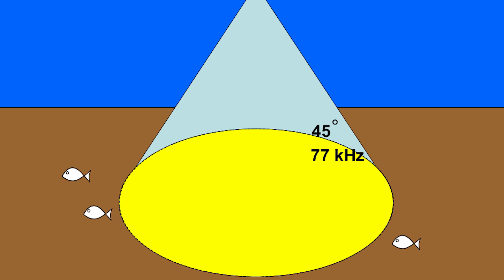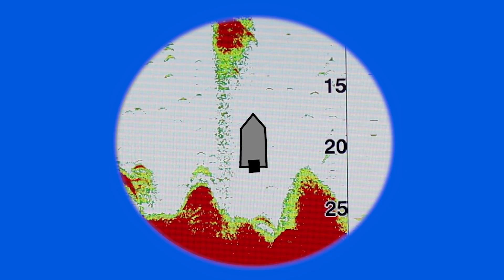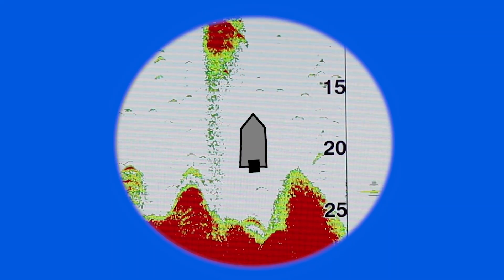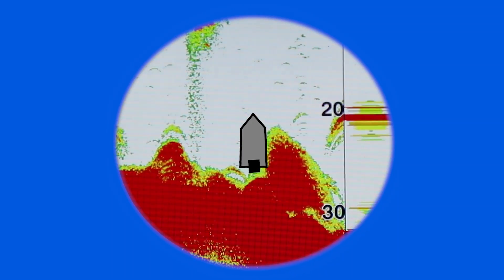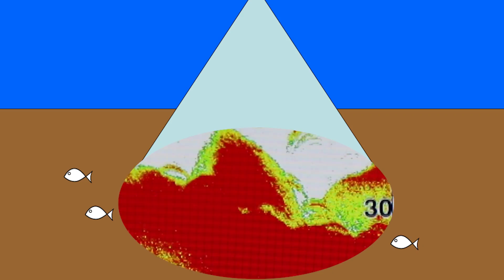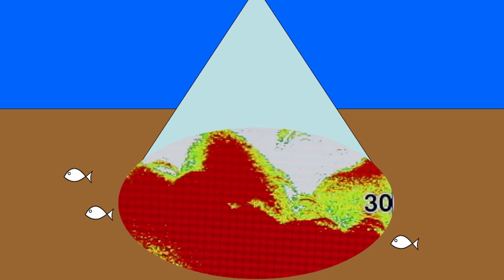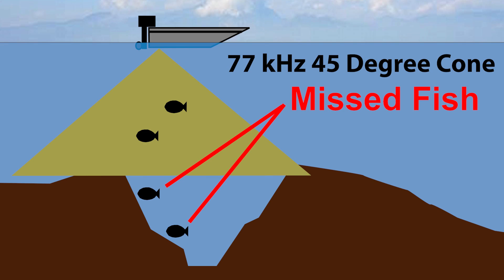With the 77k hertz frequency selection you'll get greater area coverage due to the 45 degree transducer cone angle. This greater area of coverage however does come with some trade-offs, such as less detail in your return images and the possibility of missing information or fish, especially in areas with frequent steep drops or ledges.